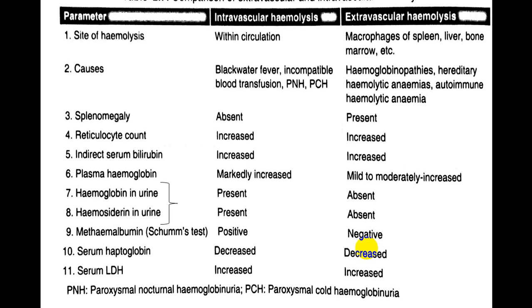Splenomegaly is very common in extravascular hemolysis. Reticulocyte count is elevated in both varieties. Bilirubin (indirect) is increased in both. Plasma hemoglobin (hemoglobinemia) is markedly increased in intravascular more than extravascular hemolysis. Hemoglobin and hemosiderin are present mainly in intravascular hemolysis and absent in extravascular. Methalbuminemia is positive in intravascular and negative in extravascular. Haptoglobin is decreased in both; LDH is increased in both. The key difference: hemoglobin and hemosiderin in urine favor intravascular hemolysis; their absence favors extravascular.